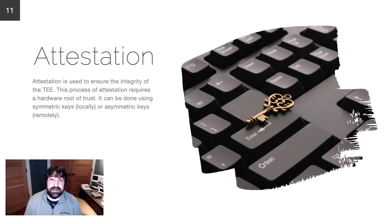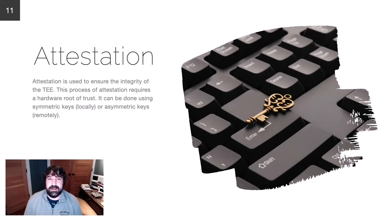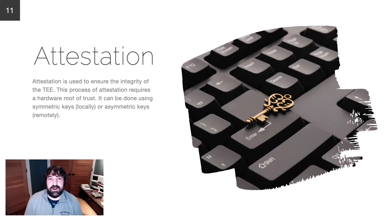We mentioned attestation, and this could fill an entire talk on its own. Briefly, attestation is the way we measure the TEE to assure it contains the data and code we think it contains — it's how we guarantee it to be secure. This can be done locally using symmetric keys or remotely using asymmetric keys, and it's at the heart of how we know the TEE has been measured to be secure.